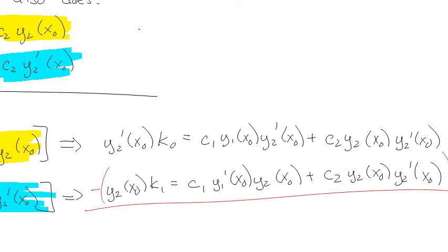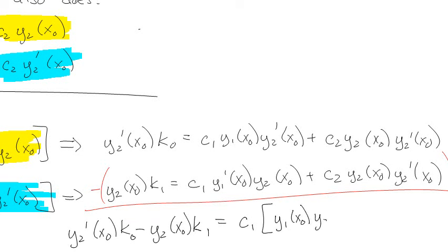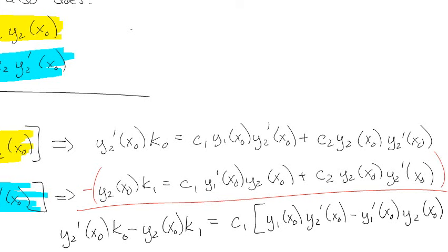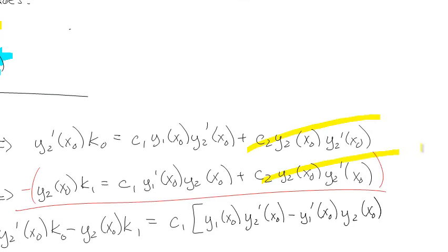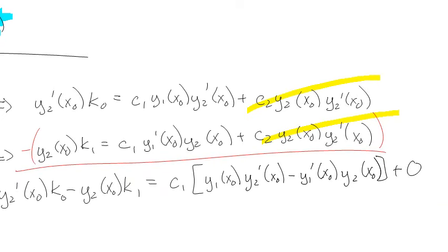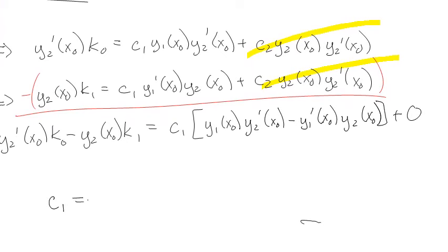So now what I'm going to do is I am going to subtract these two. So if I subtract this whole thing from the top one, then on the top, I end up with y2 prime times k0 minus y2 times k1. And I'm going to pull c1 out. And you're like, this is stupid. Why are we doing this? Because it makes us happy, because we're interested, because we love learning.